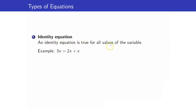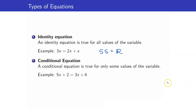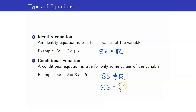One way to interpret an identity equation is that its solution set is the set of real numbers. On the other hand, a conditional equation — from the word itself — is only true for some values of the variable. You cannot plug in any real number. Here the solution set is not the set of real numbers; we only have one solution. The solution set is x equals 2, meaning it is only true when x equals 2, and not true for any number that is not equal to 2.